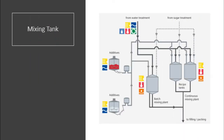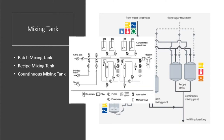We will now introduce the mixing tank. For the mixing tank, there are three types used in the process: the batch mixing tank, the recipe mixing tank, and the continuous mixing tank. The batch mixing tank and recipe mixing tank will be connected to the continuous mixing tank. Each of these tanks will have process control in level.